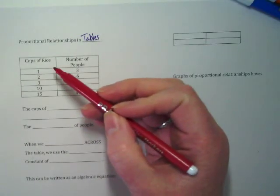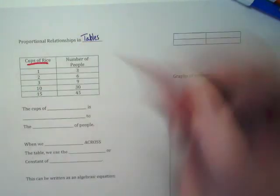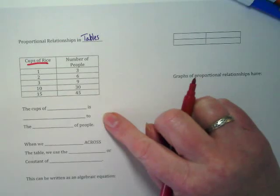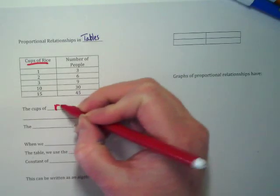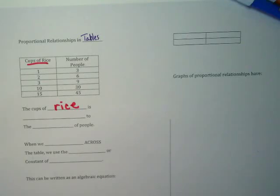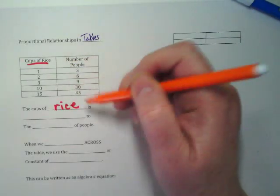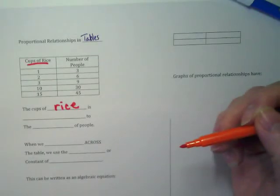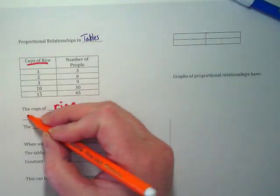Please notice at the top of this table, we're looking at cups of rice. And we're going to finish this statement down here. The cups of rice, and that's in red. Underline cups of rice, and write the word rice in red.